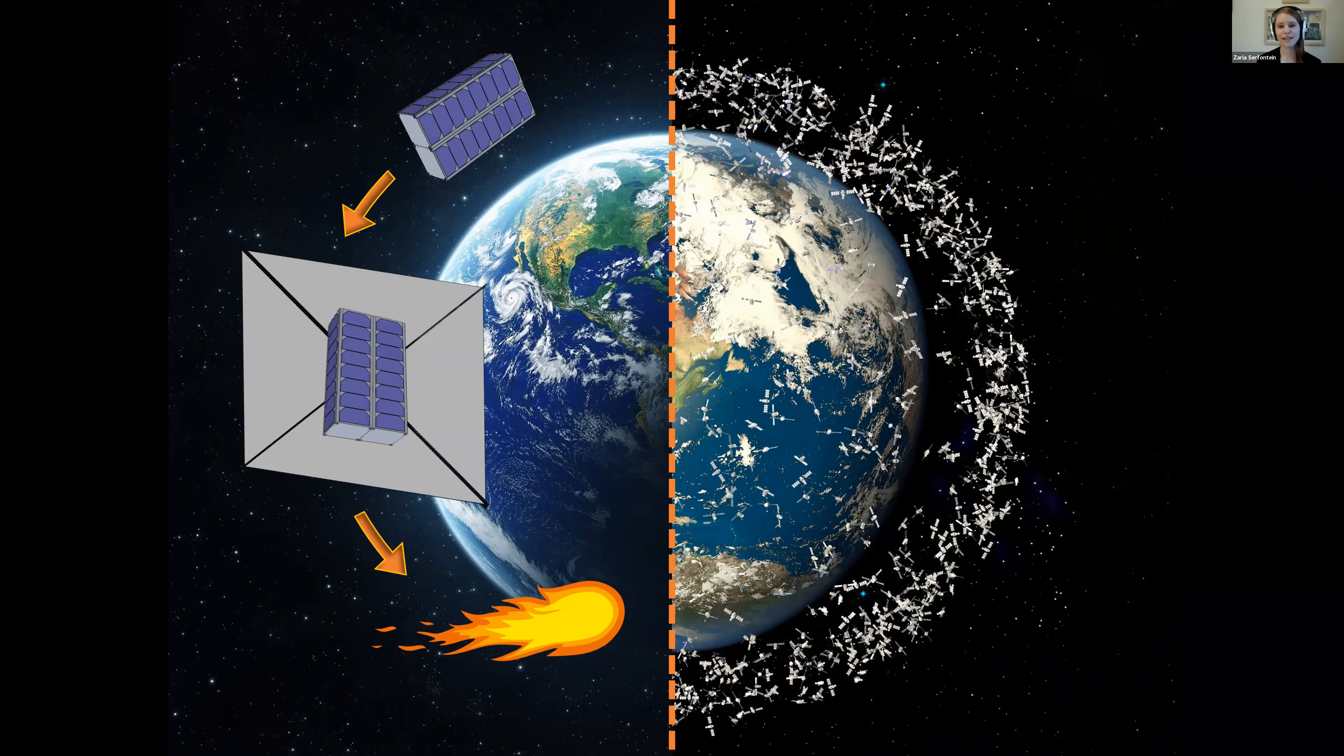Tens of thousands of satellites are planned to be launched within the next decade, including mega constellations, which consist of thousands of small satellites working together. Advancements in satellite technologies have helped us improve life here on Earth, but they've also contributed to an increasingly worrying issue: space debris.